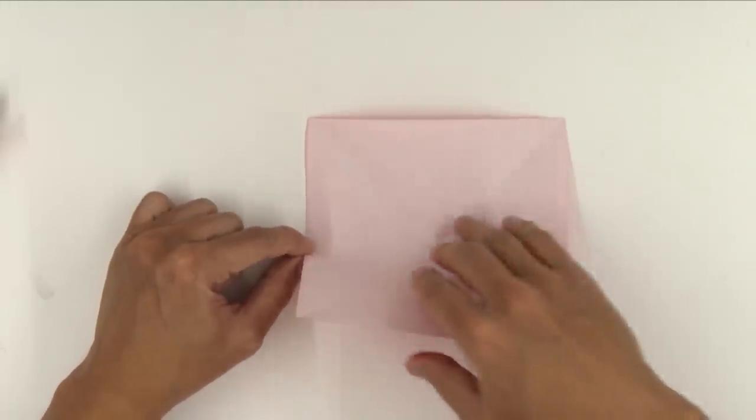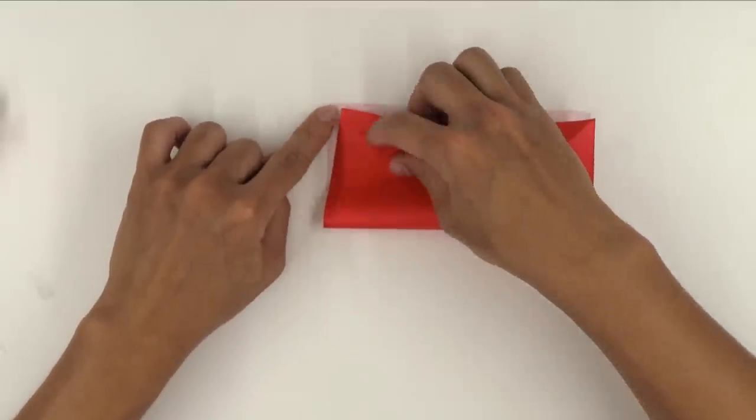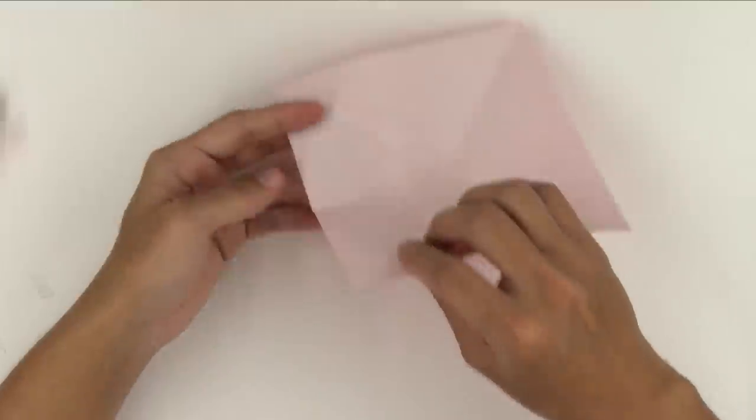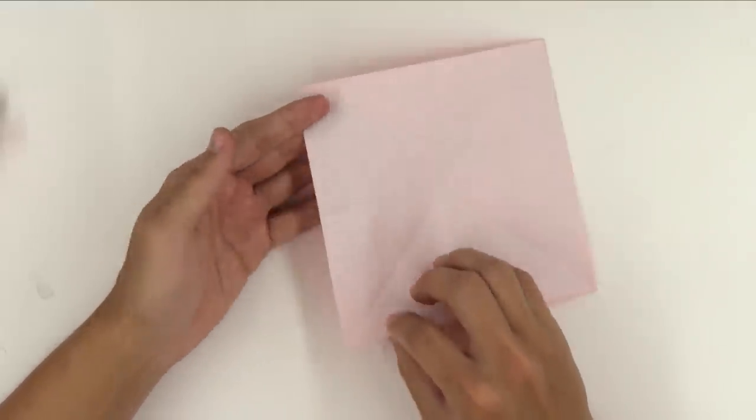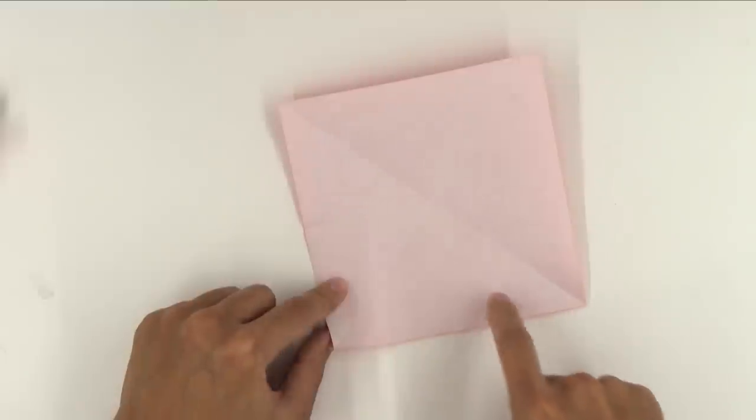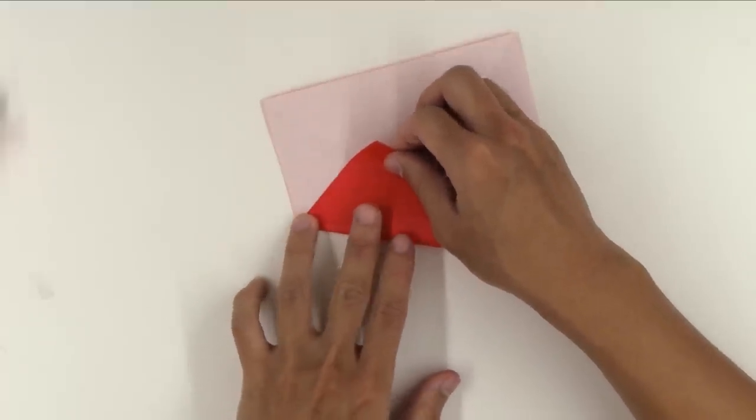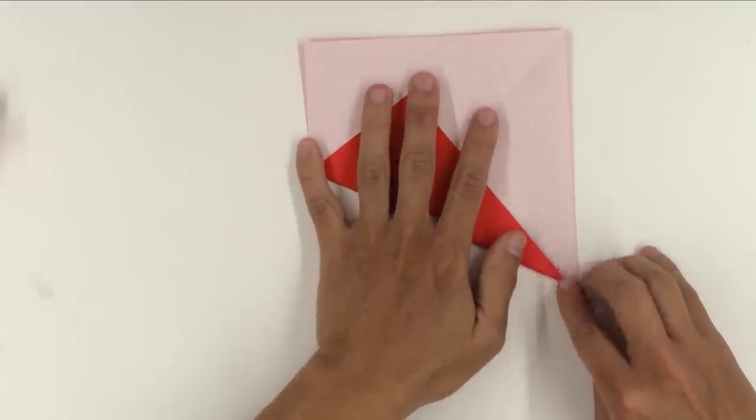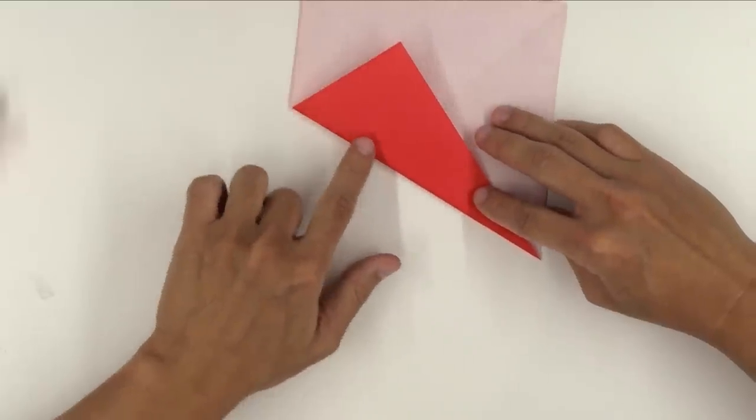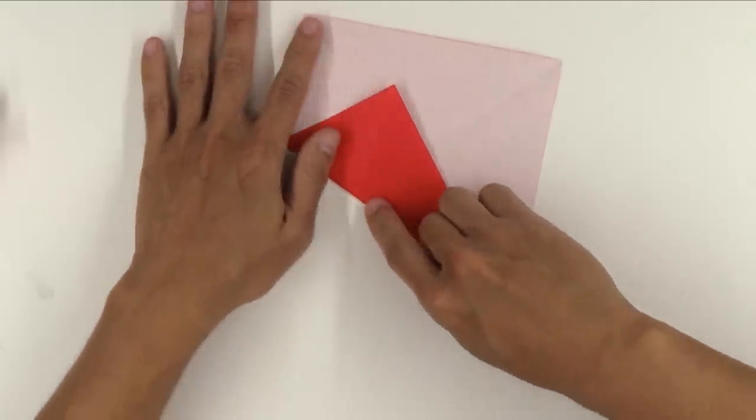Now, you're going to fold here the side of the paper, making this point here go up to this point here. But, you're just going to pinch the middle. Like this. Now, make a fold from this point up to this point here. But, again, you're just going to pinch one point. Carefully,